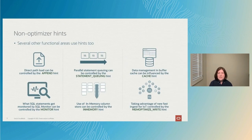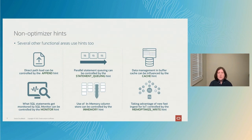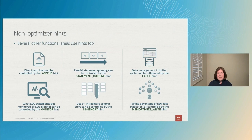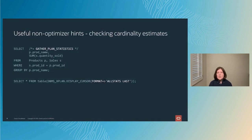One good example is direct path load operations. You can add an APPEND hint to your INSERT statement that tells Oracle to bypass the buffer cache and write data directly to storage. You can also use a CACHE hint to tell Oracle what information you want stored in the buffer cache in main memory. But probably the most useful non-optimizer hints are the ones that share information about what happens when a SQL statement is being executed.